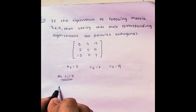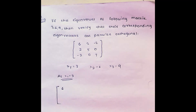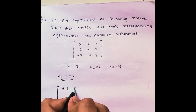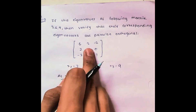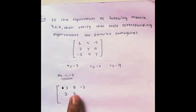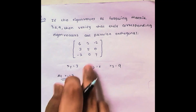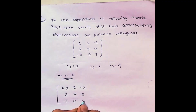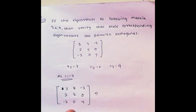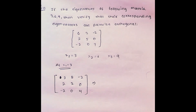As I mentioned in the previous video, we subtract lambda from the diagonal elements. So 6 minus 3 gives 3, 5 minus 3 gives 2, 7 minus 3 gives 4, with the off-diagonal elements minus 2, 2, and 0 remaining as is. This gives us the resulting matrix for lambda 1 equal to 3.